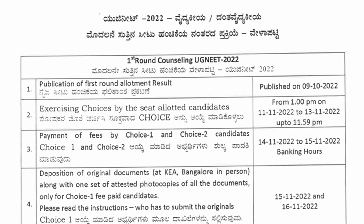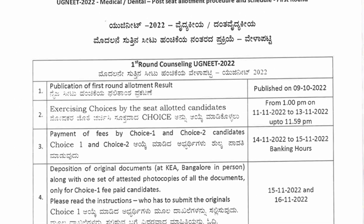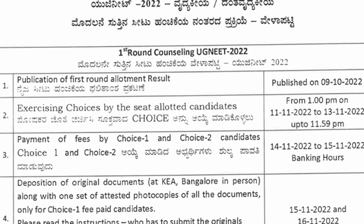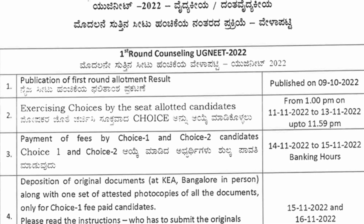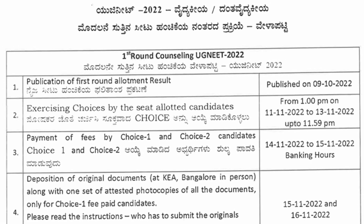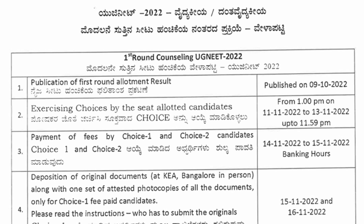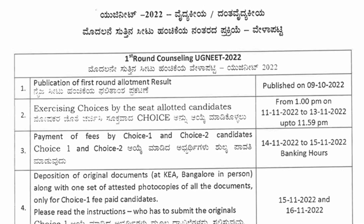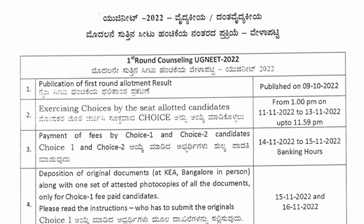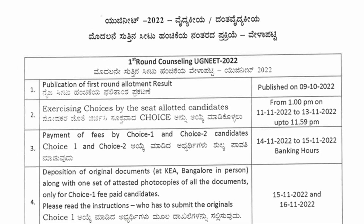Choice number three: if you are not satisfied with the allotted seat but still wish to participate in the next round. Choice number four: if you are not at all satisfied with the KEA allotted seat. If the candidate chooses choice number four, you have to quit from the KEA counselling process.